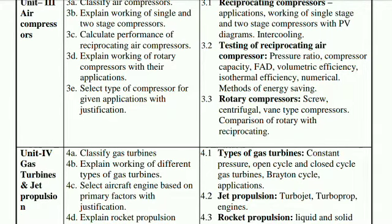Continuing Unit 3 testing parameters: volumetric efficiency, isothermal efficiency, and numerical methods of energy saving. The third point covers rotary compressors: screw compressor, centrifugal compressor, vane type compressor, and a comparison of rotary with reciprocating compressors.